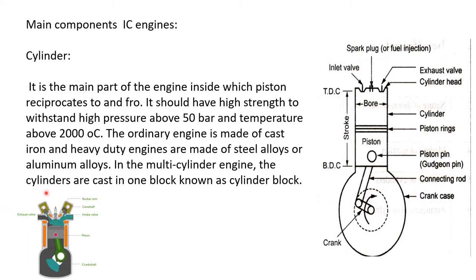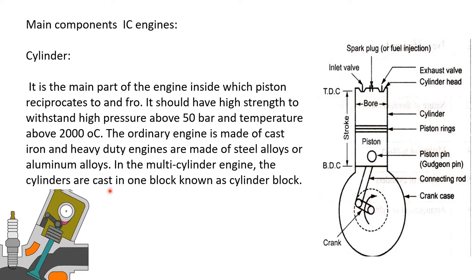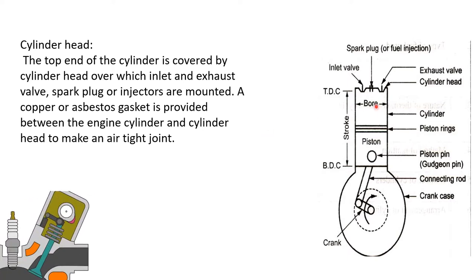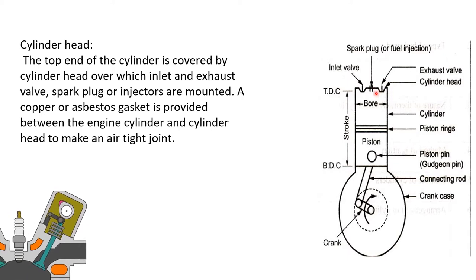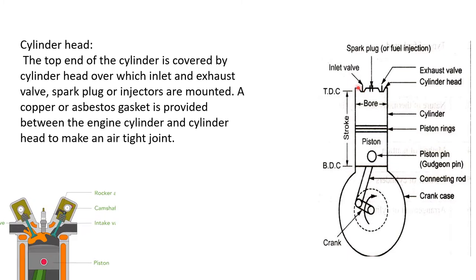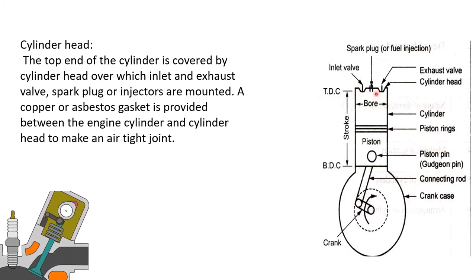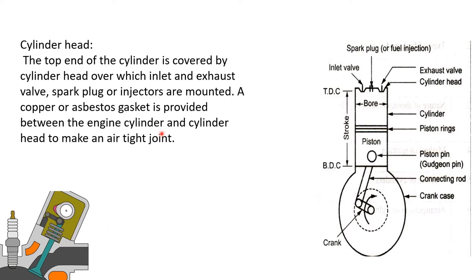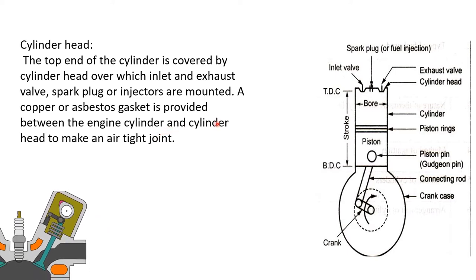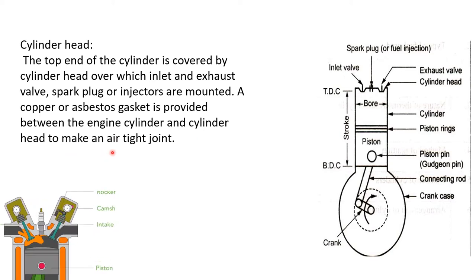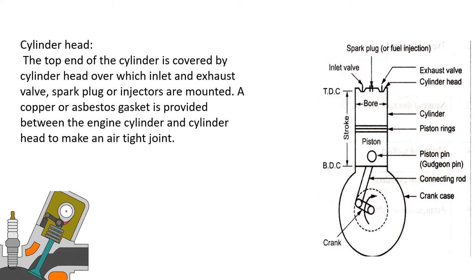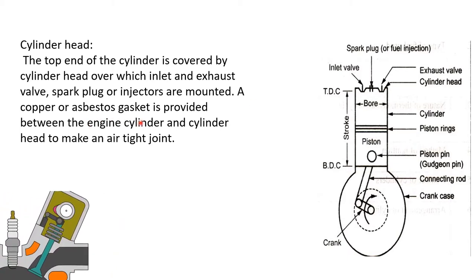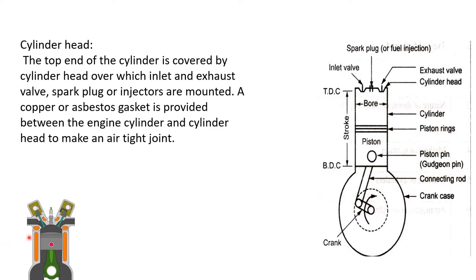In a multi-cylinder engine, the cylinders are cast in one block known as the cylinder block. The cylinder head covers the cylinder and houses the inlet and exhaust valves, spark plug, and fuel injector. A copper or asbestos gasket is provided between the engine cylinders and the cylinder head to make an airtight joint.